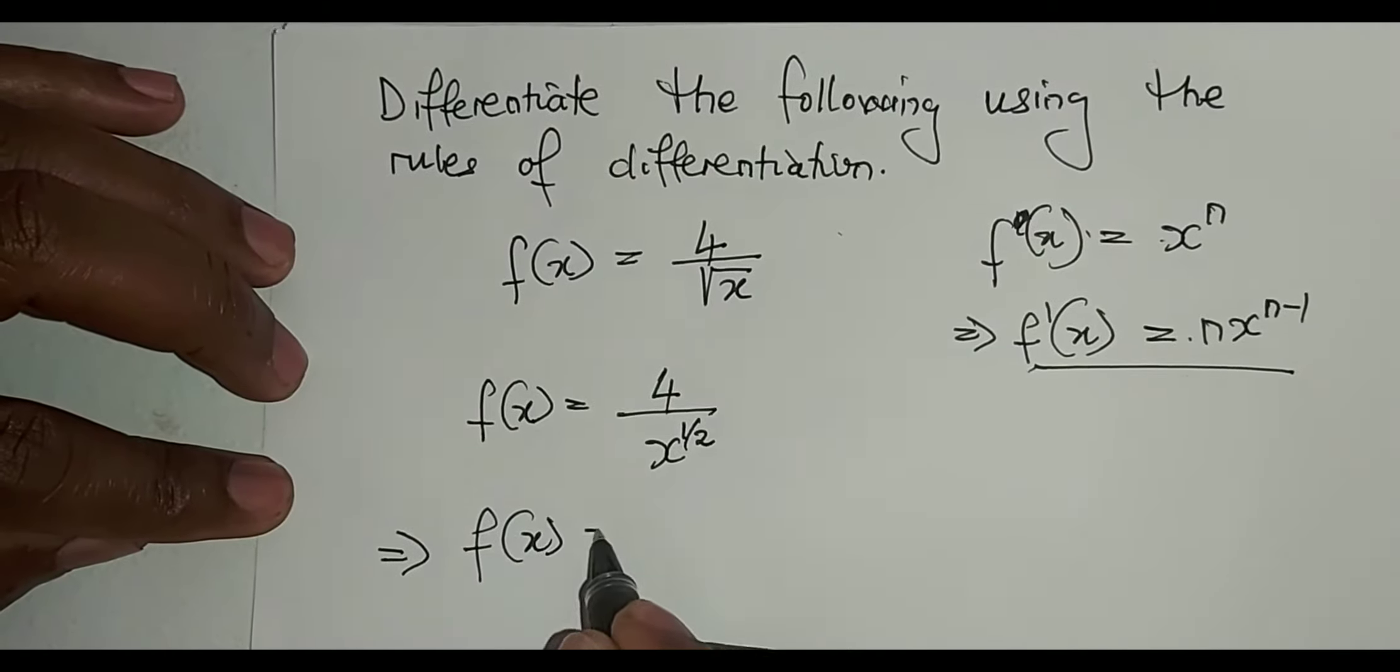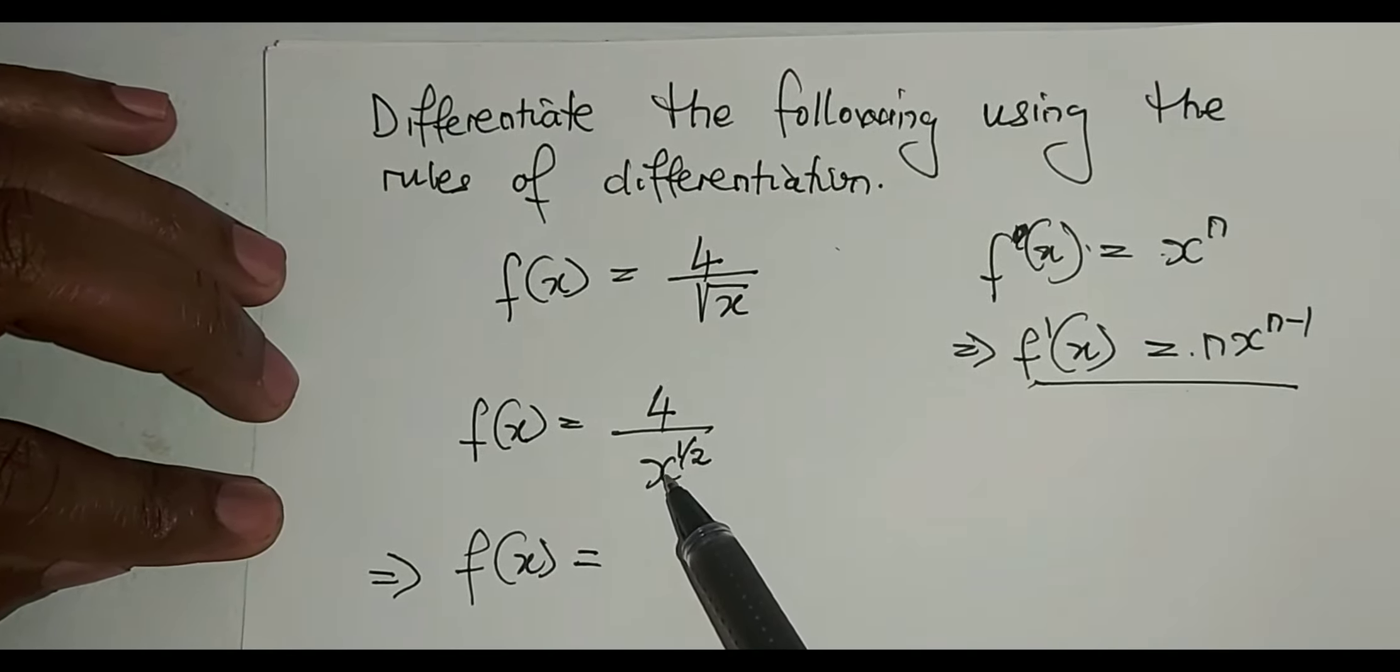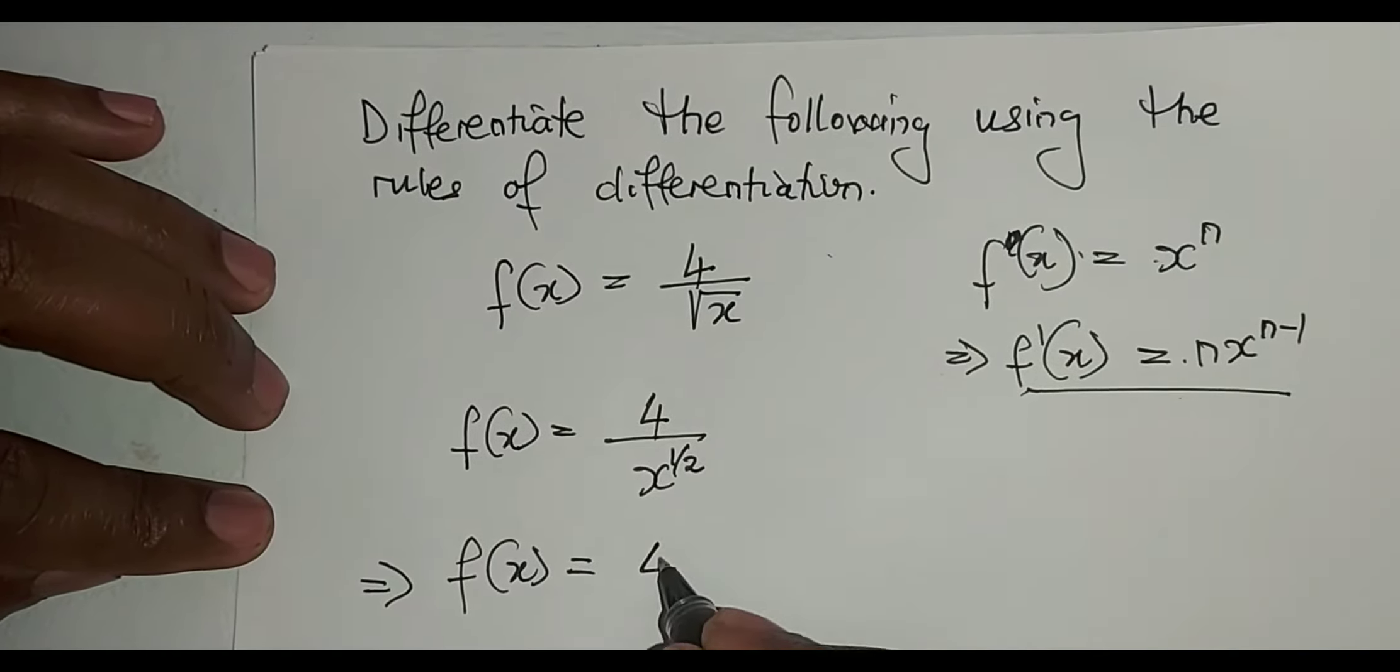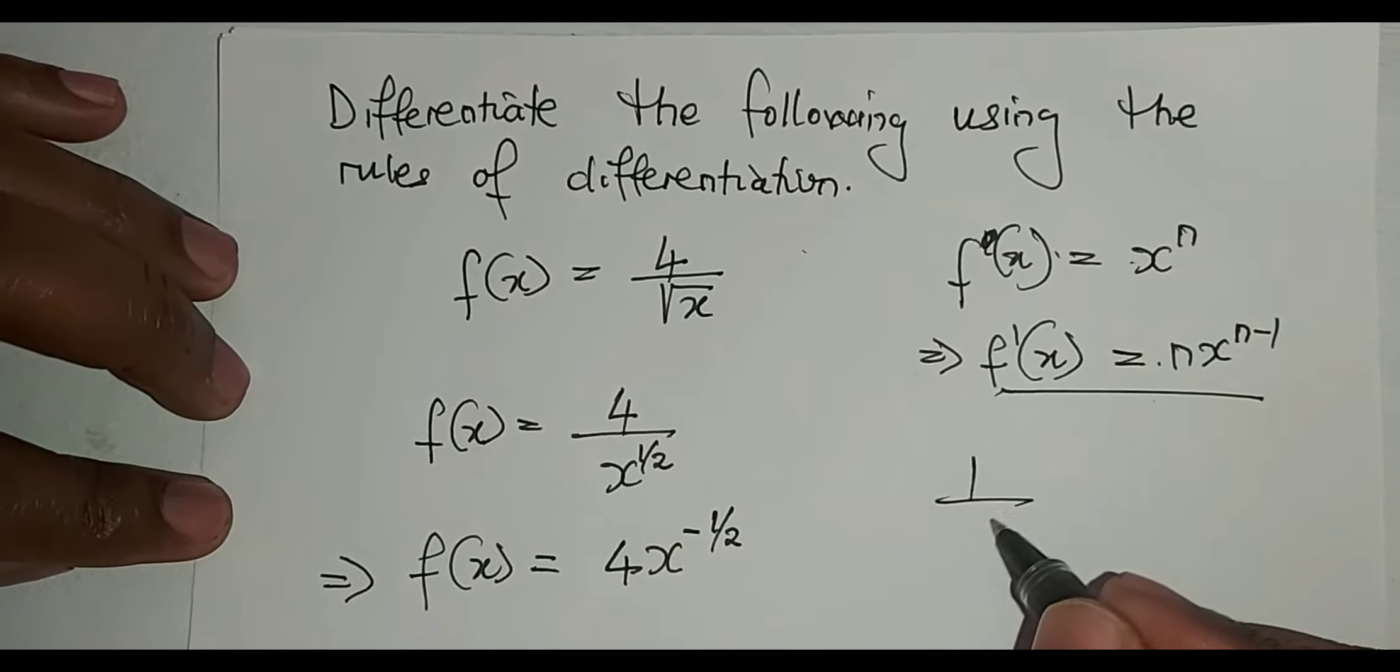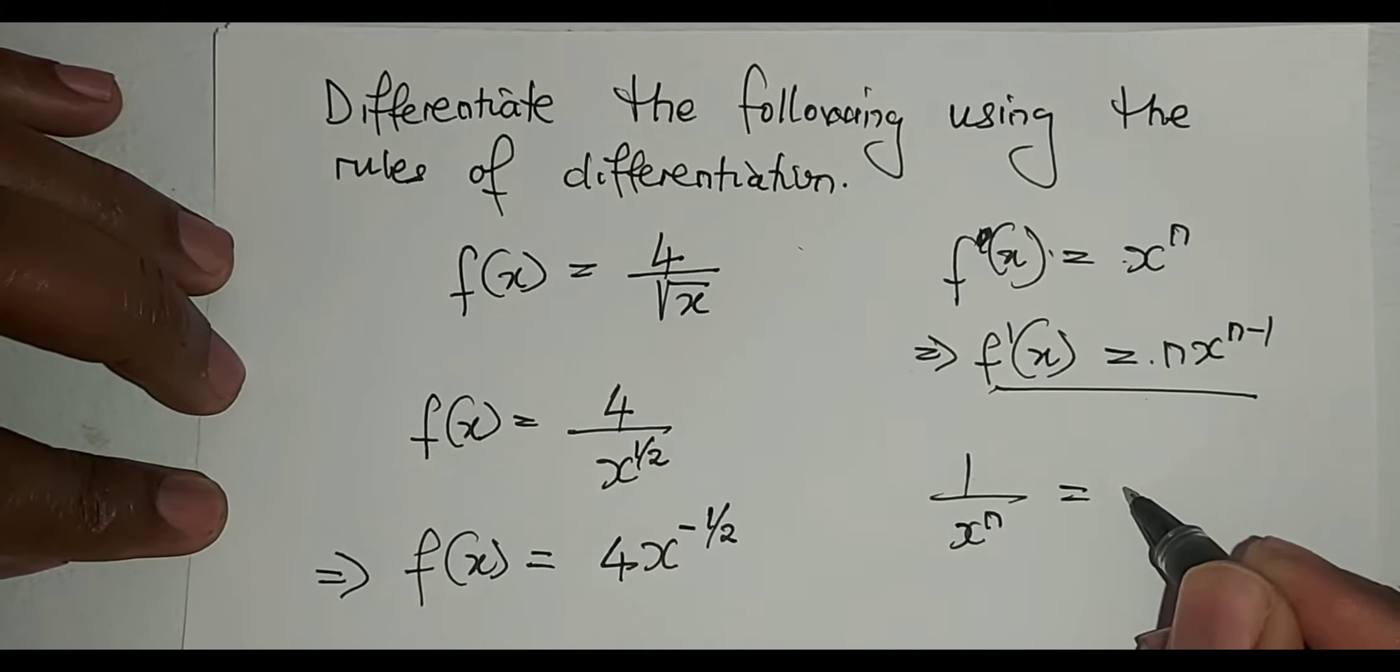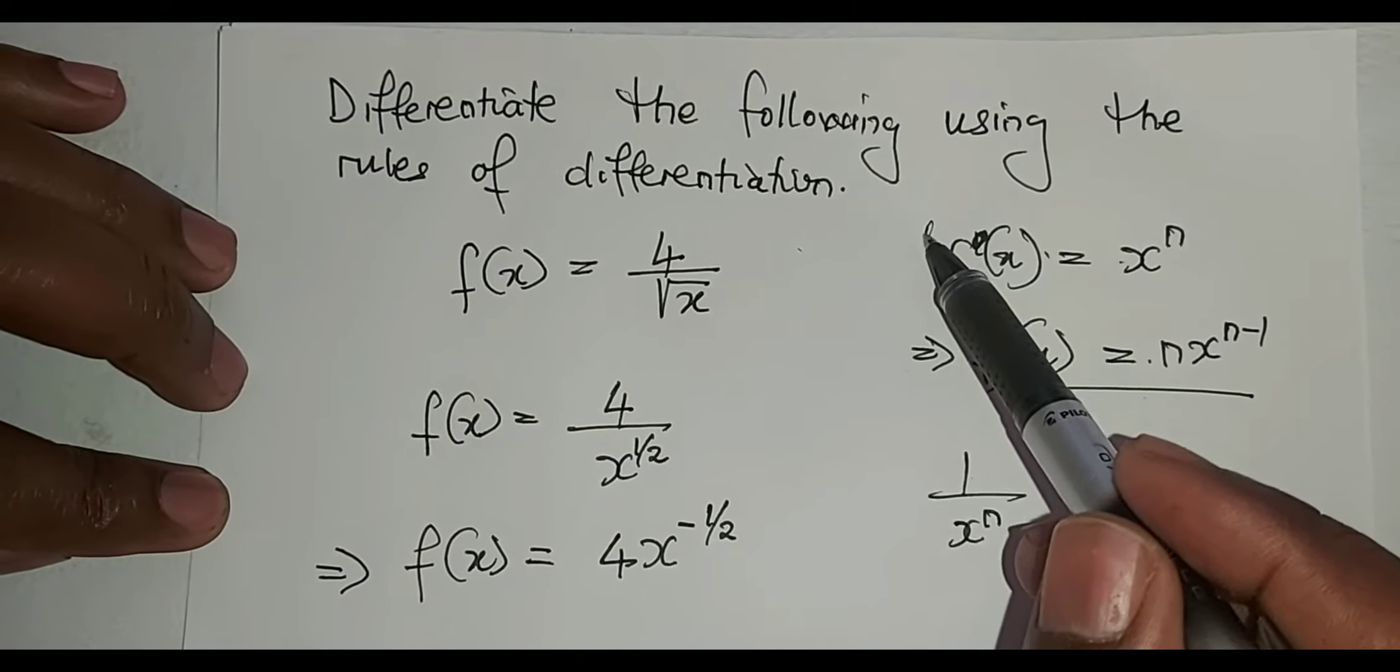The problem is our x is on the denominator, we want to put it to the numerator, which means it will be 4x to the power minus 1 over 2. We know that 1 over x to the power n is equal to x to the power minus n by using laws of exponents.